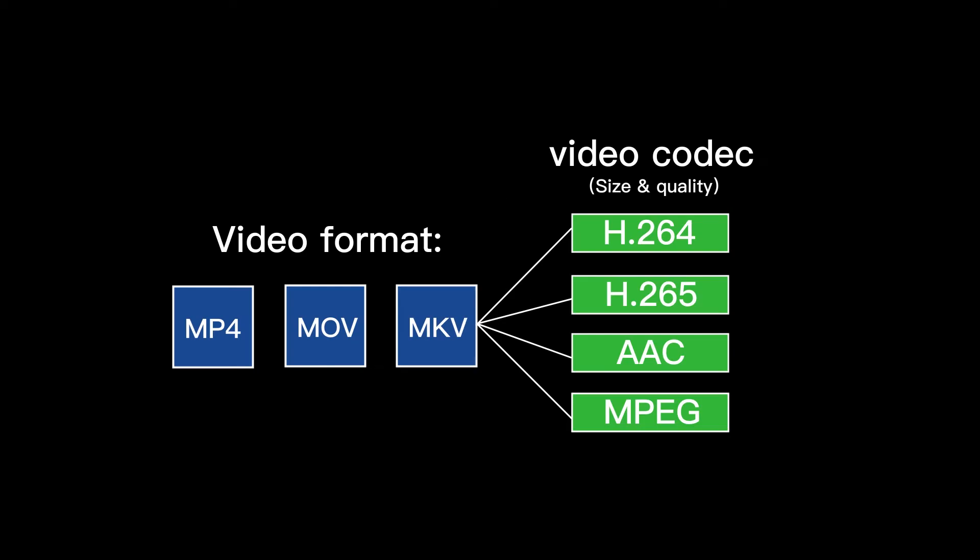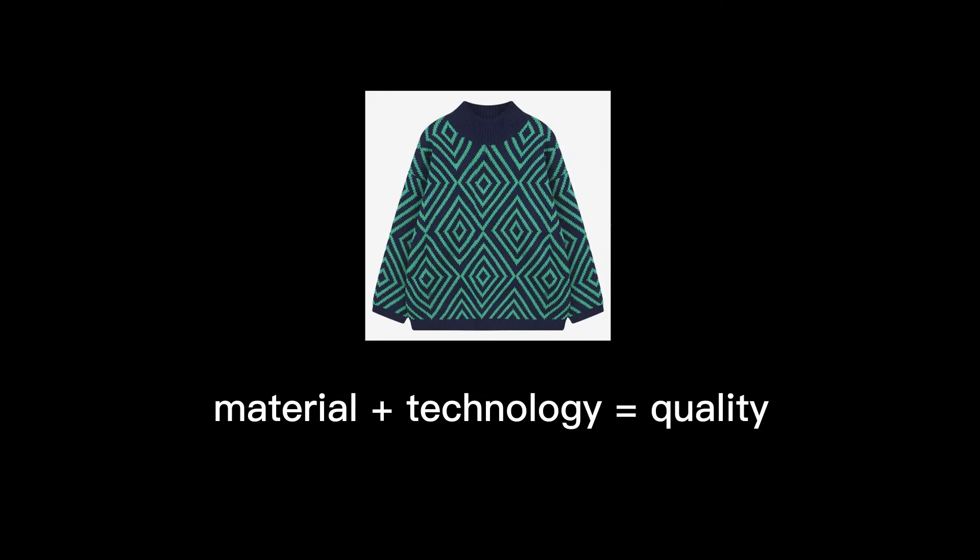First, we have common formats like MP4 and MOV — these are just video packages that contain the video and audio. The whole decision of video quality and size is the codec, what they call H.264 and H.265. We can think of the MP4 and MOV format like a sweater, and the quality of the sweater is really the material used in it.